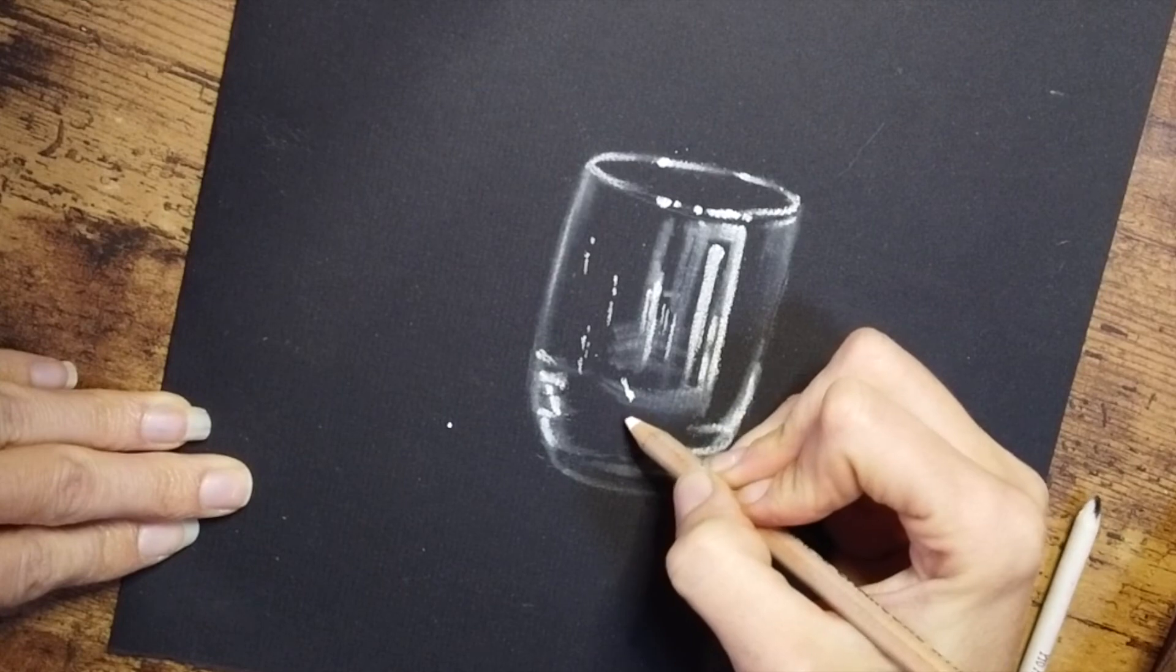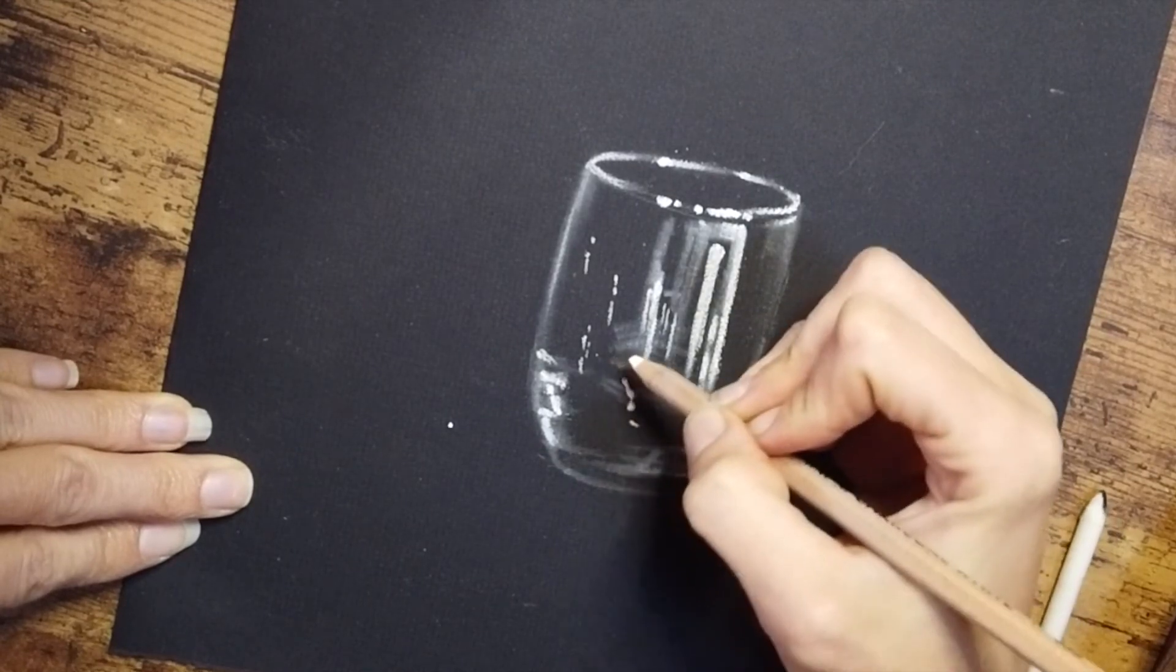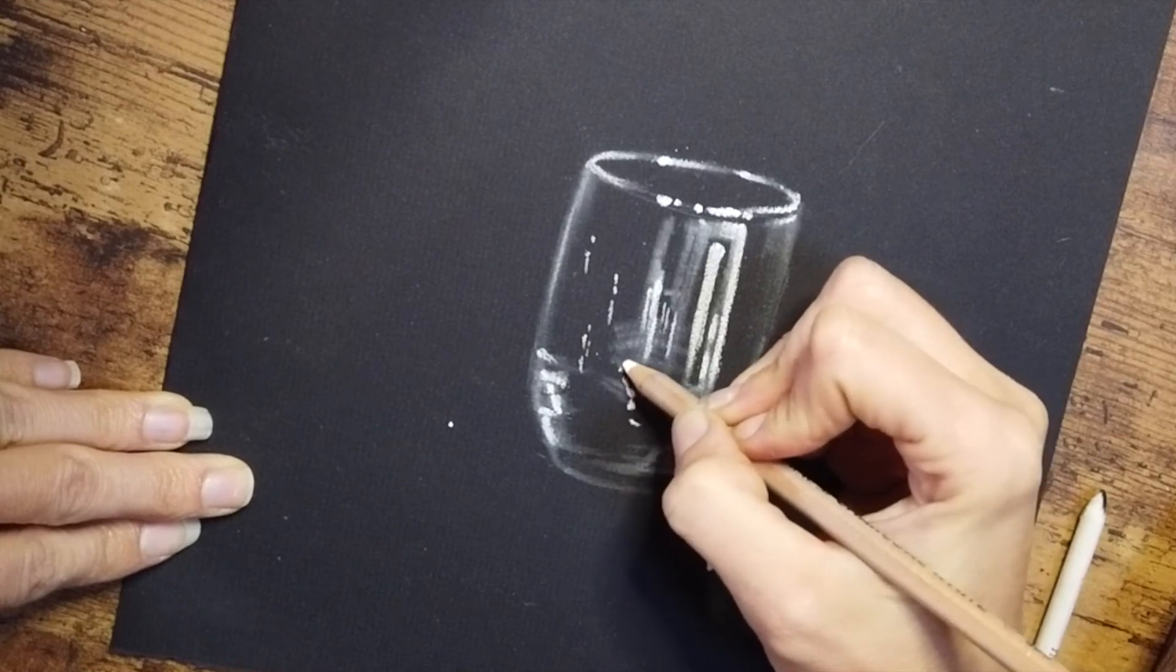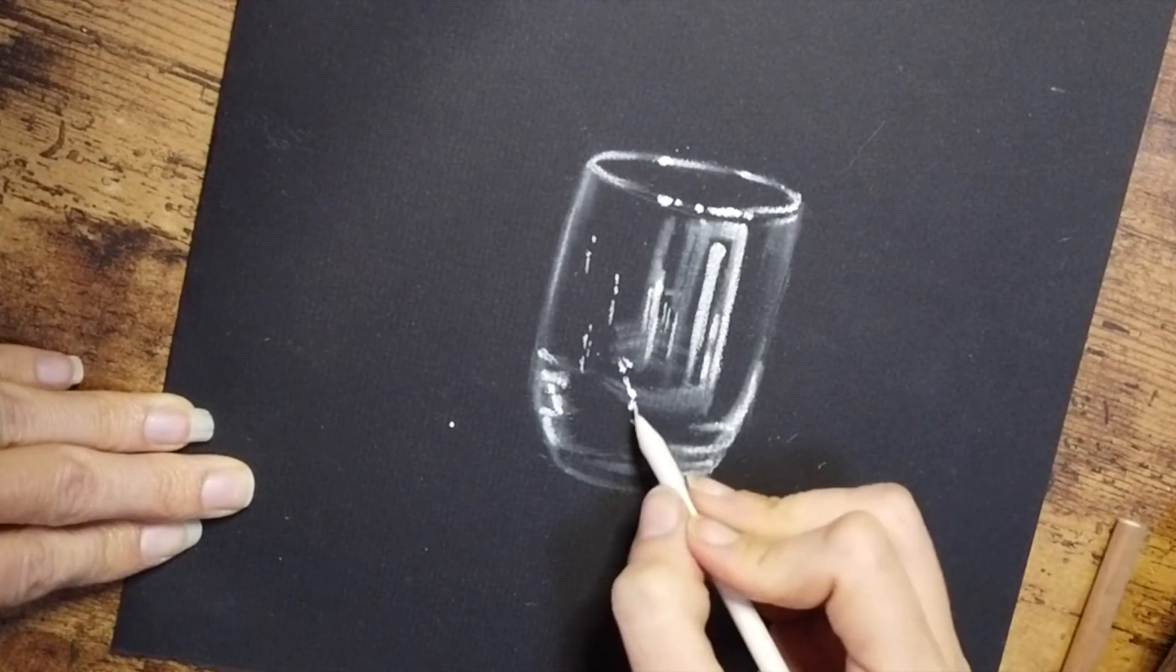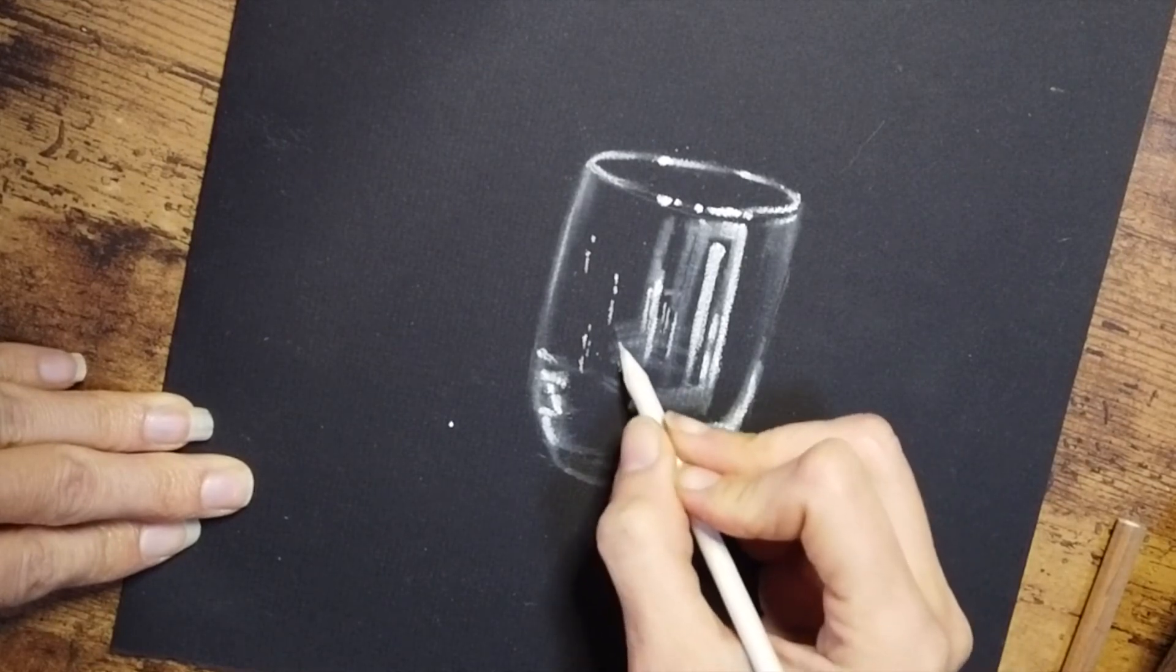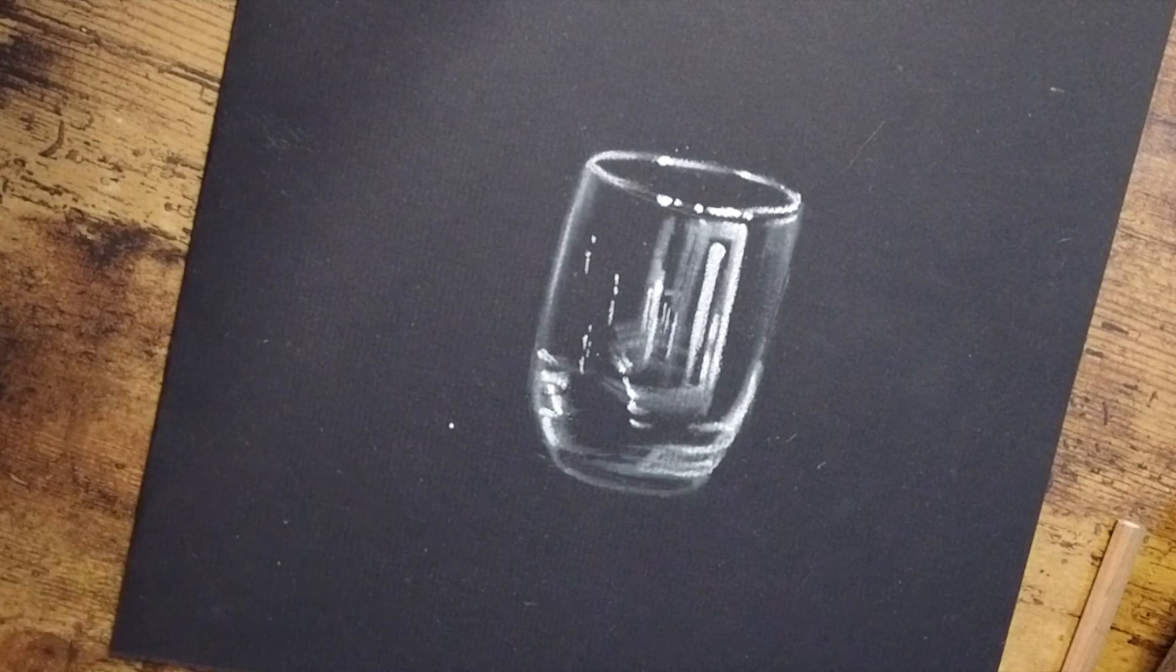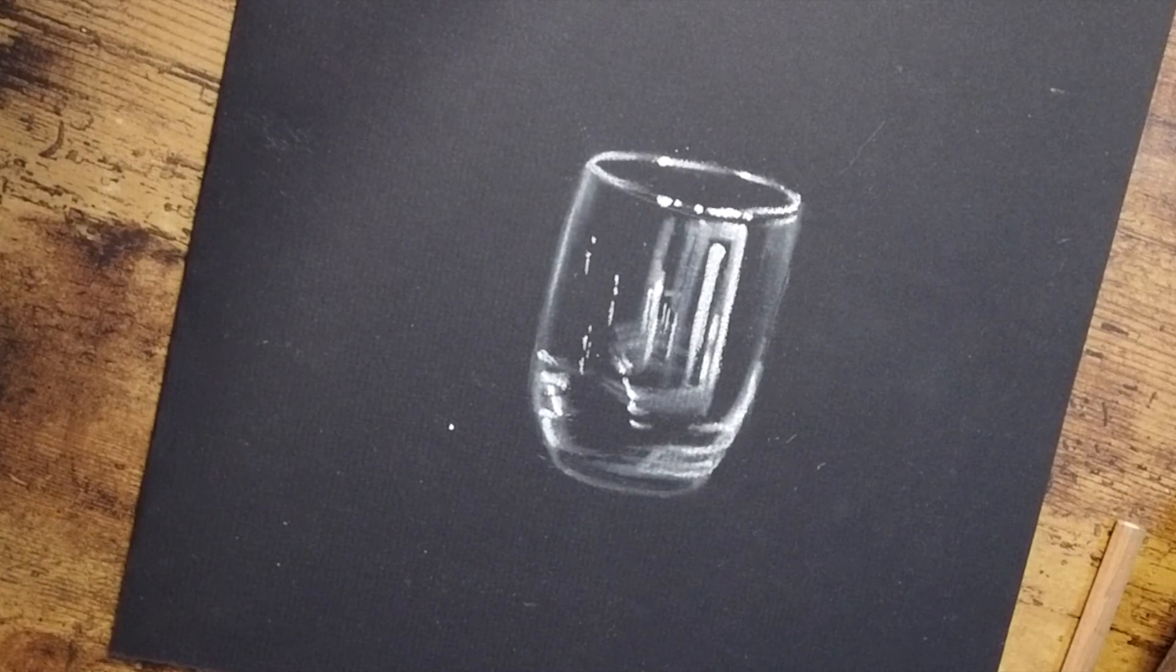Alright, so just a few more finishing touches of some little shiny areas here. And as you can see, this can still look pretty realistic, even though all you're doing is putting in lines and dots and blending them around. So white charcoal is a really fun media to work with, and I hope you guys enjoyed it.